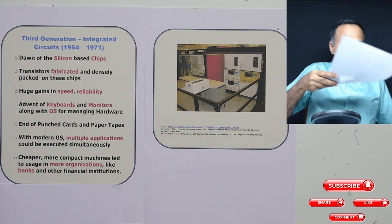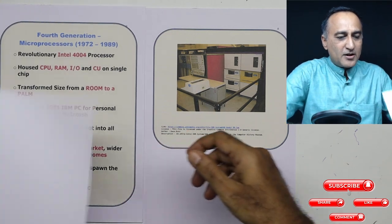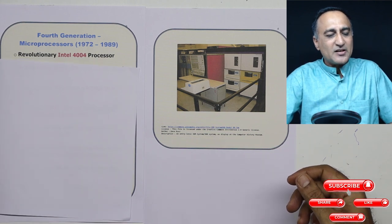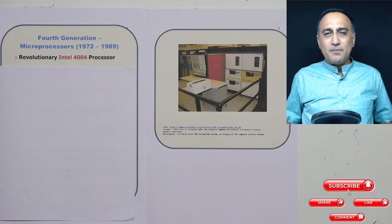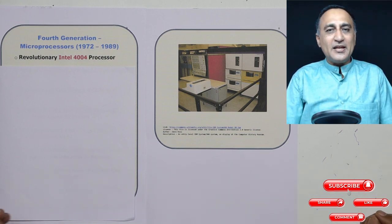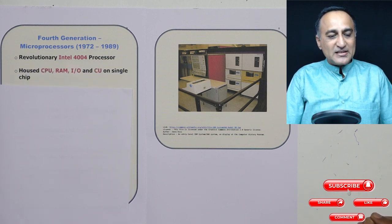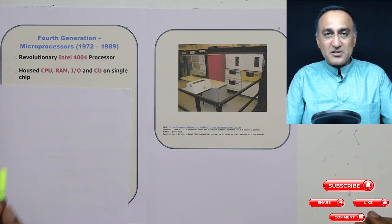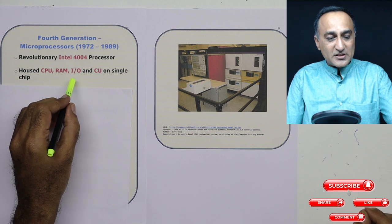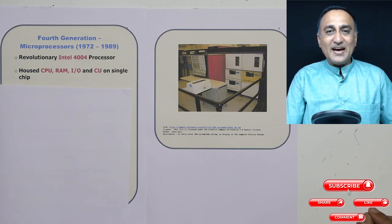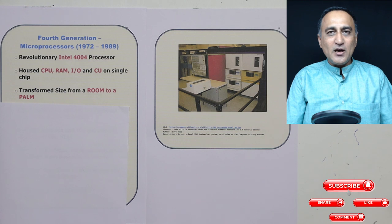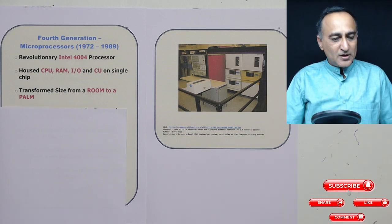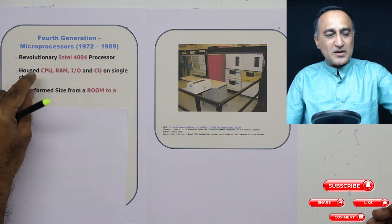In the fourth generation, which started around 1972 and ended around 1989, the most important development was the introduction of the microprocessor — specifically the Intel 4004. This was a huge development because a single chip had the CPU, control unit, ALU, RAM, and input/output facilities. What took a room in previous generations now fit in the palm of your hand.